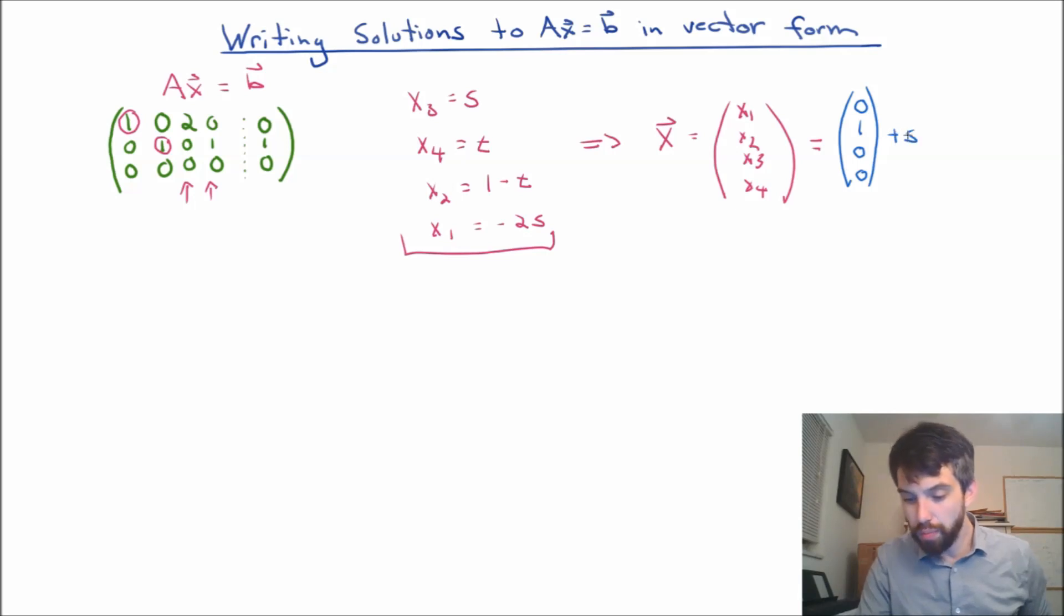And then I'm going to multiply it by this parameter s, and let's see what has a parameter s in it. Well, x1 has minus 2s, so I'm going to put a minus 2 in for x1. x2 has no s, so I put a 0. x3 has just 1s, and x4 has 0.